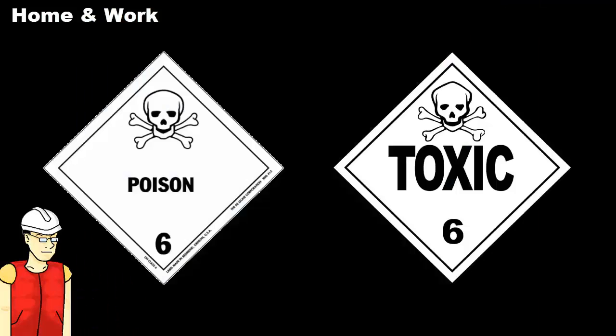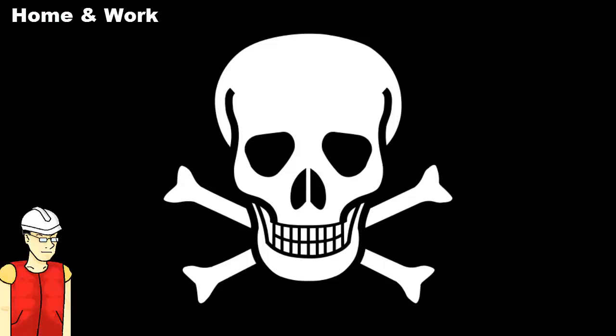The biggest difference between these terms is the intent or function of the toxic or poisonous substance. A poison is something created for the purpose of killing or damaging, while toxic is a collateral condition of some substance. Let me give some examples.